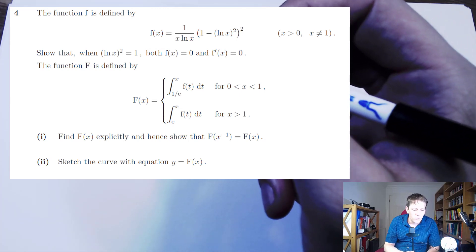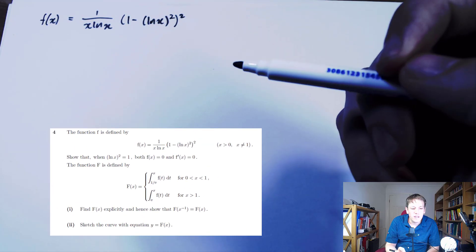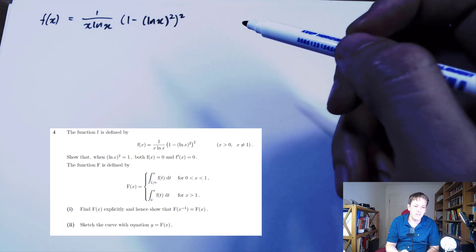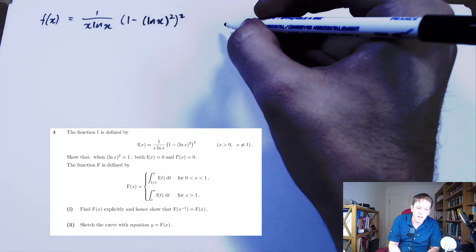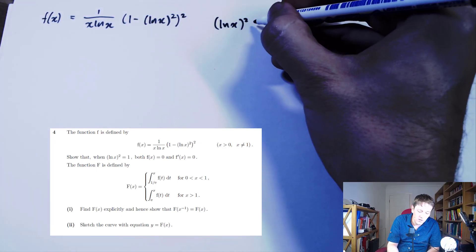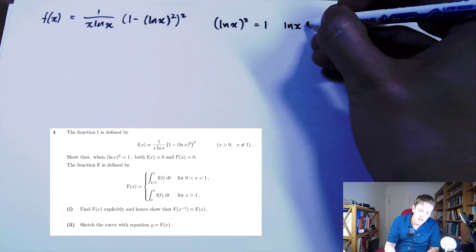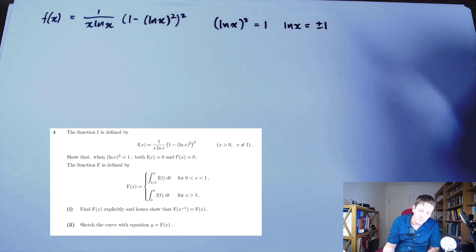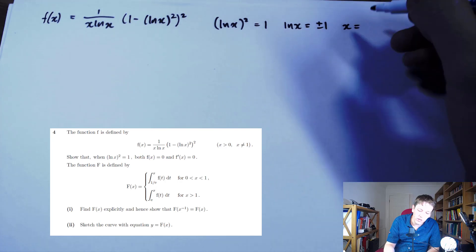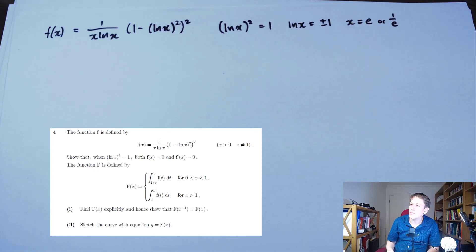So we start with this function given in the question, and it says show that when log²x = 1, both f(x) = 0 and the derivative of f is 0. The first thing to think about is what it means for log²x to be 1: that means log x = ±1, so x is either e¹ or e⁻¹, that is either e or 1/e.